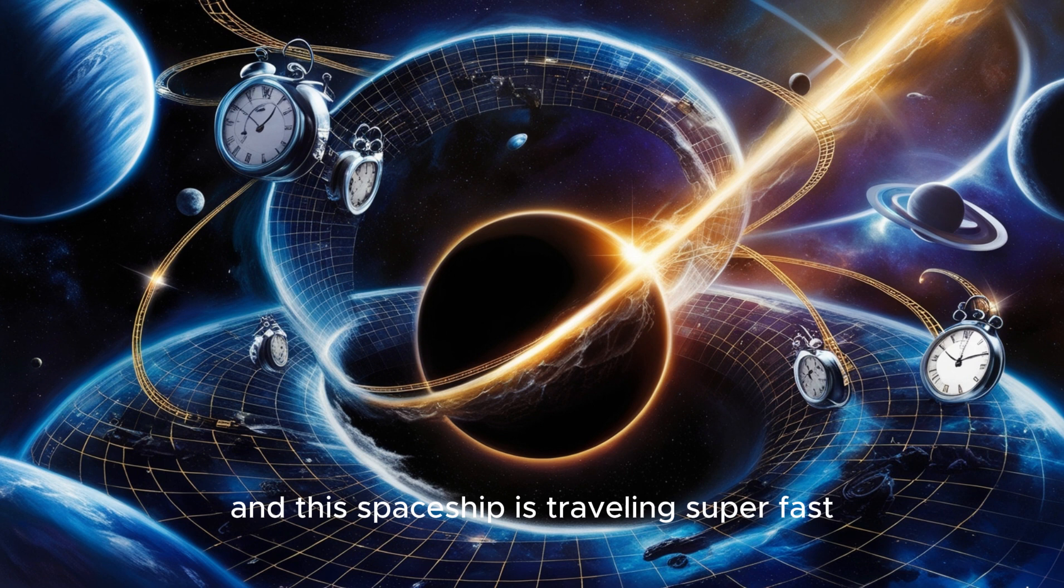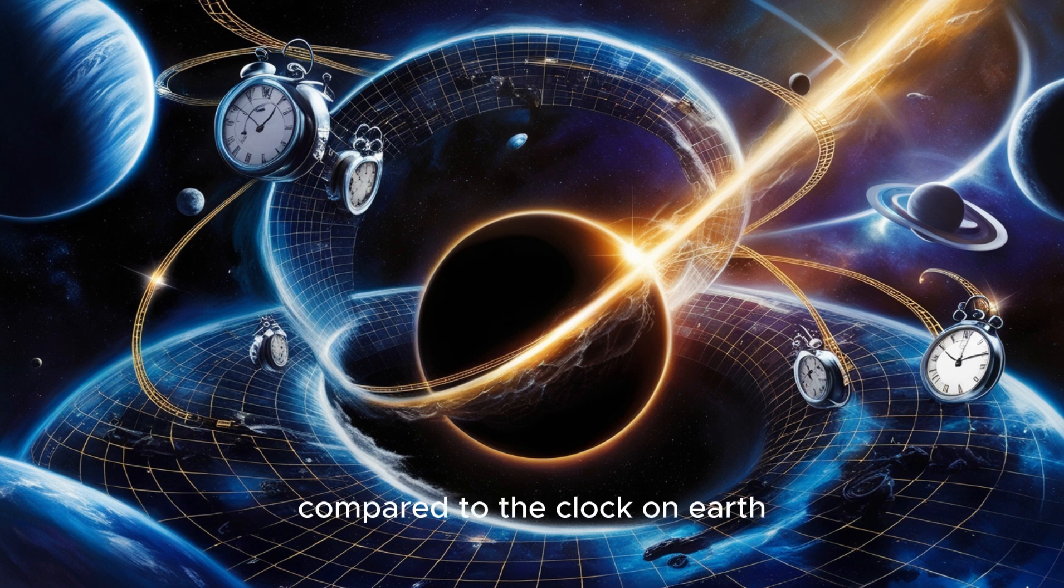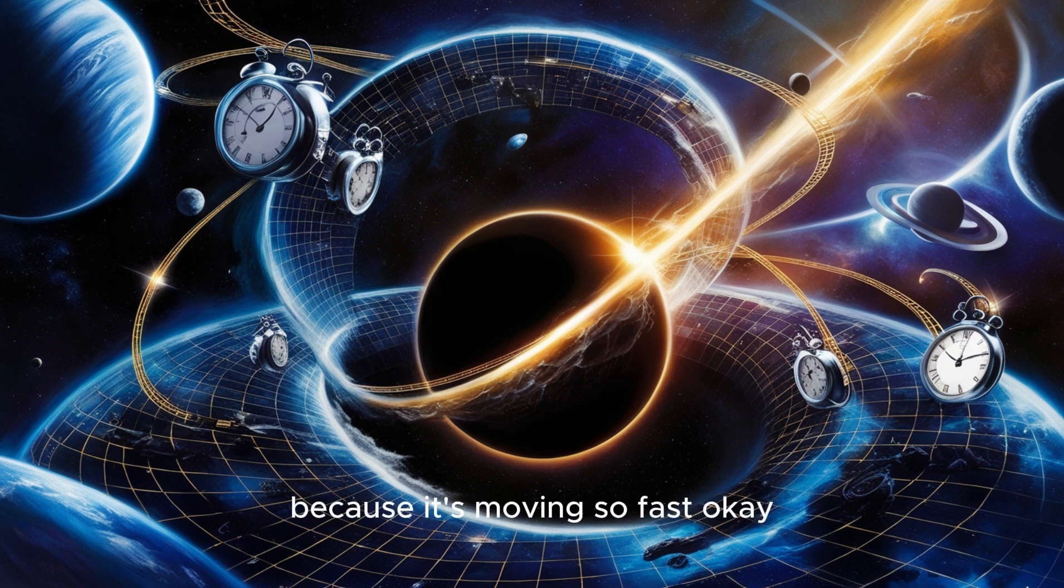Imagine we have two identical clocks, one here on Earth and another on a spaceship. And this spaceship is traveling super fast, close to the speed of light. Okay, so what happens to the clock on the spaceship? The clock on the spaceship would actually tick slower compared to the clock on Earth. And this isn't because of some mechanical problem with the clock. Time itself is actually flowing at a different rate for the clock on the spaceship because it's moving so fast.